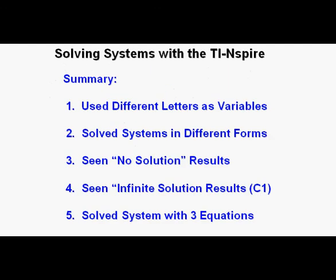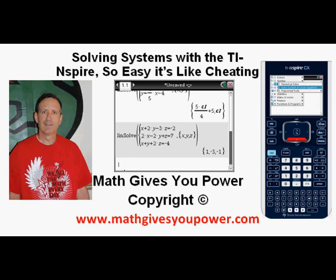In this lesson, we have done five system of equation problems with the TI-Nspire calculator. We've solved systems of equations in different forms. We've used different letters as variables. We've seen what no solutions looks like. We've seen what infinite solutions looks like, and that's when we see the c1. And we've solved a system with three equations and three unknowns. This has been solving systems with the TI-Nspire calculator. So easy, it's like cheating. Thanks for viewing.